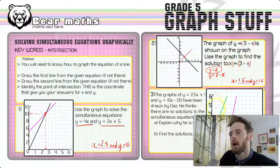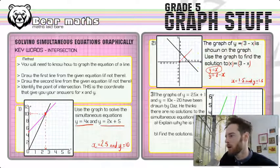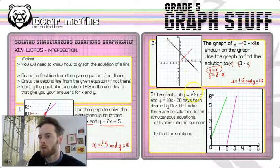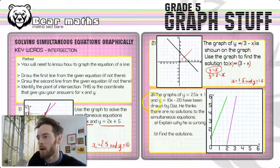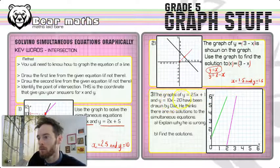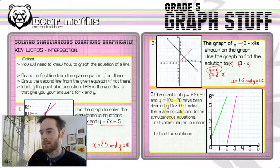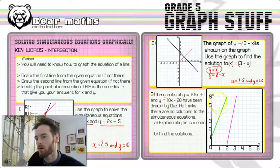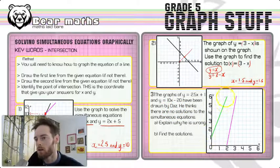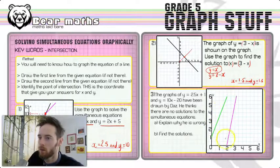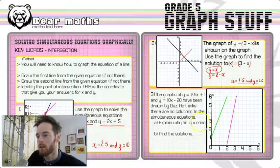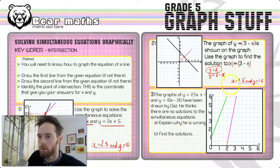So move yourself over, have a look at the third question. We got the graphs of y equals 2.5x plus 1 and y equals 10x minus 20 have been drawn by Daz. He thinks there are no solutions to the simultaneous equations. Explain why he's wrong. Well, on the face of it, it looks like he's correct, doesn't it? Because these two lines don't cross. They don't intersect anywhere in the grid. But they will do at some point.